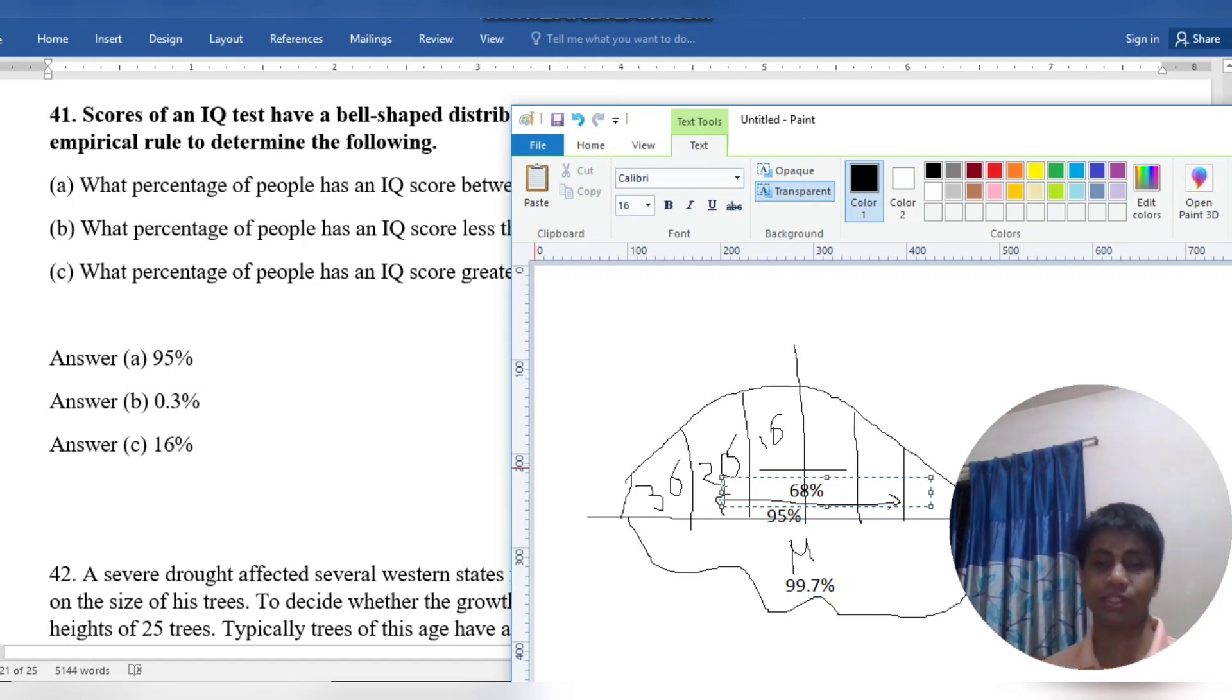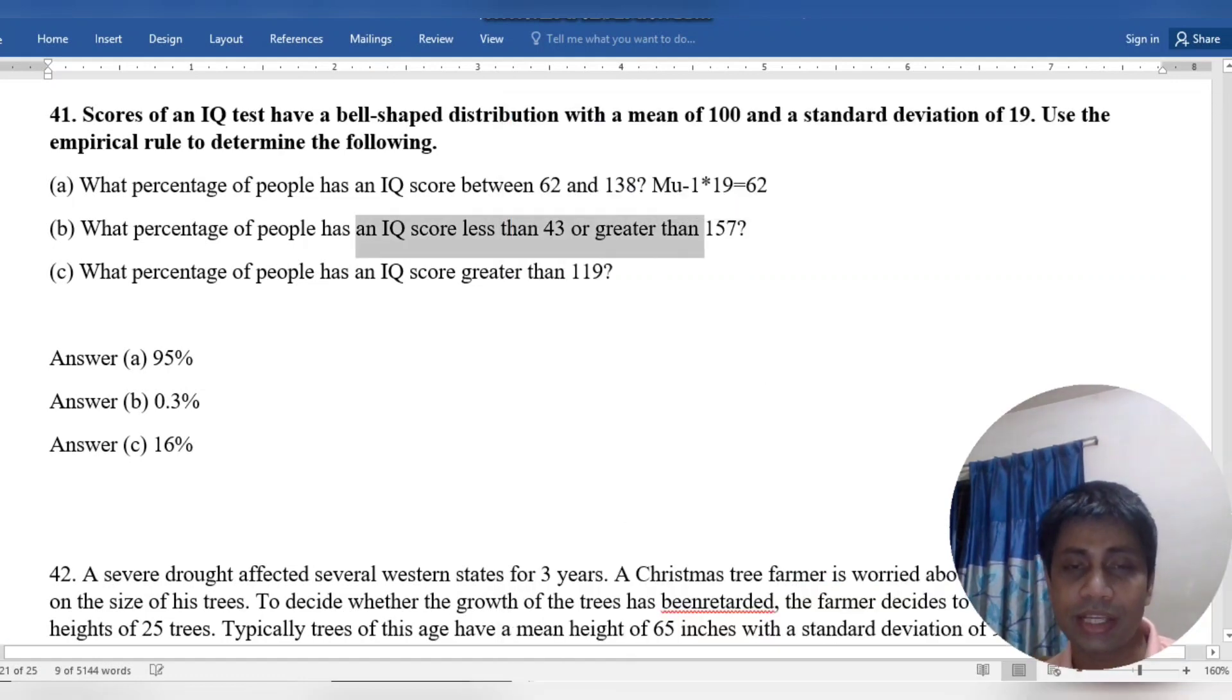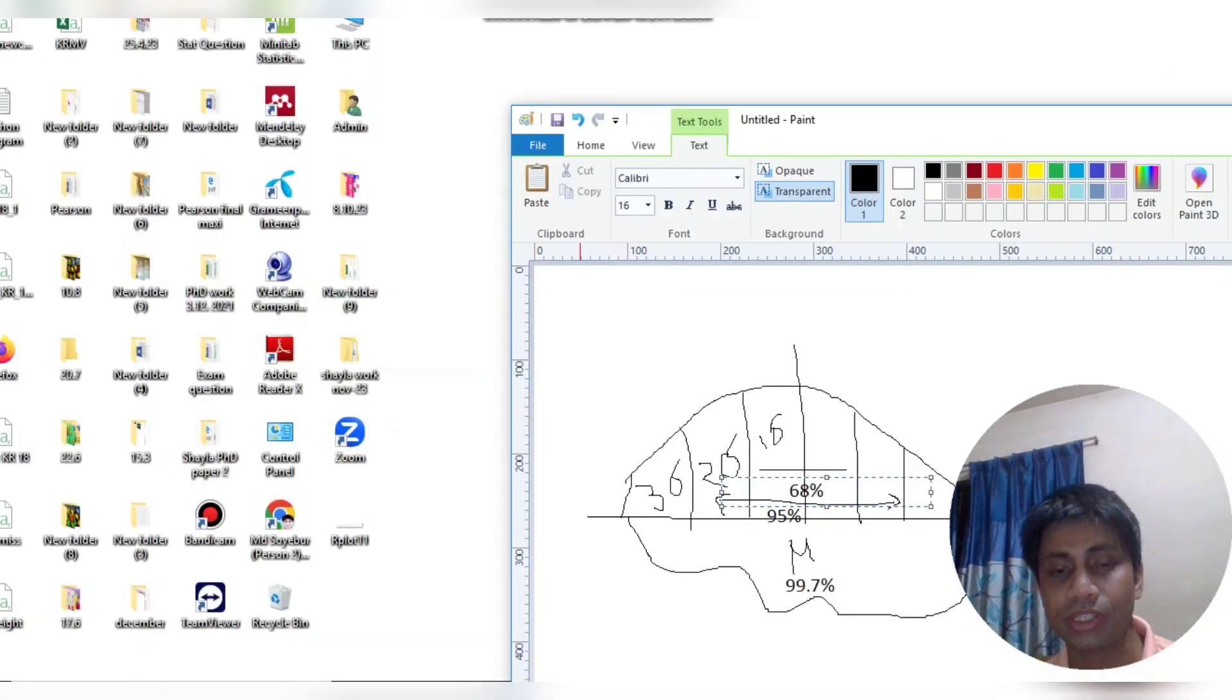Hence the IQ score is less than 43 and greater than 157.